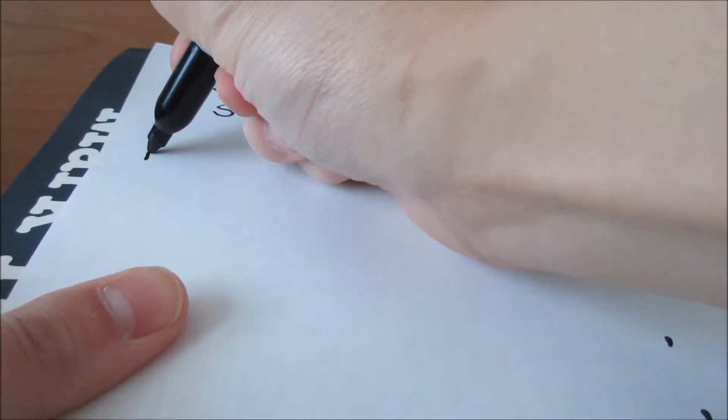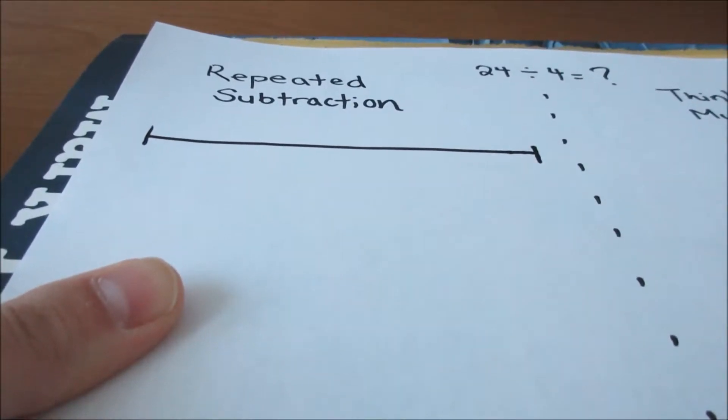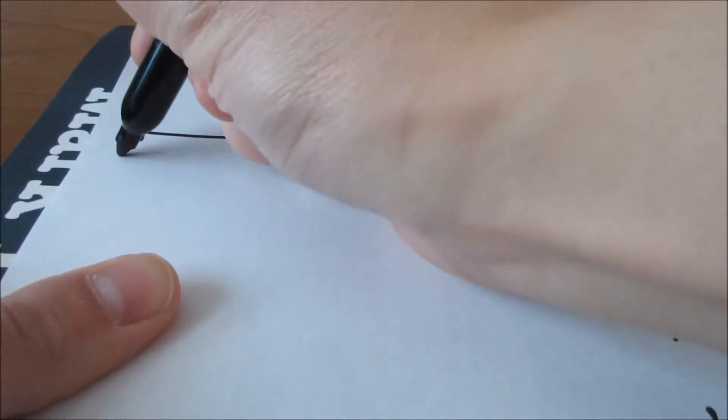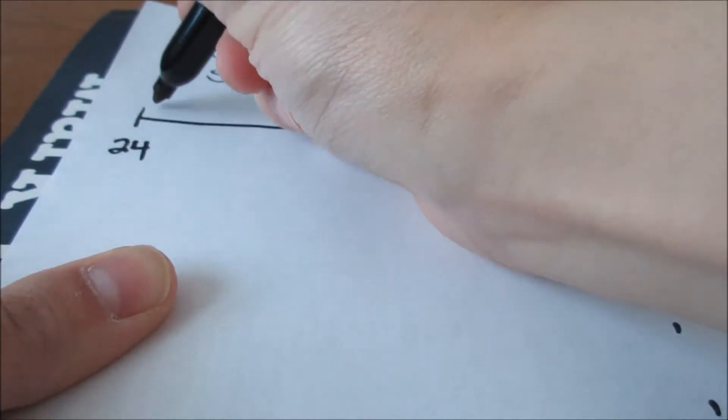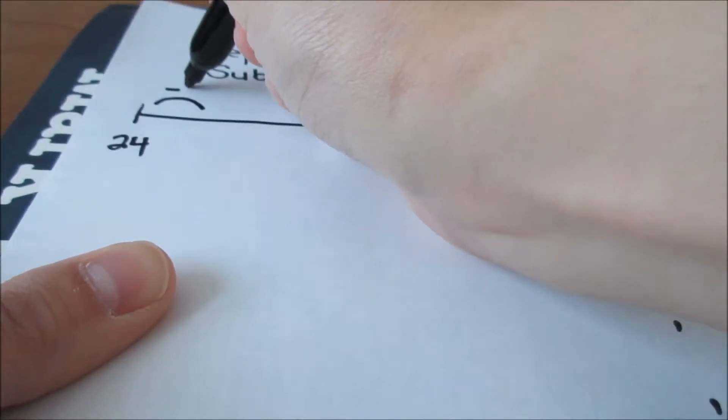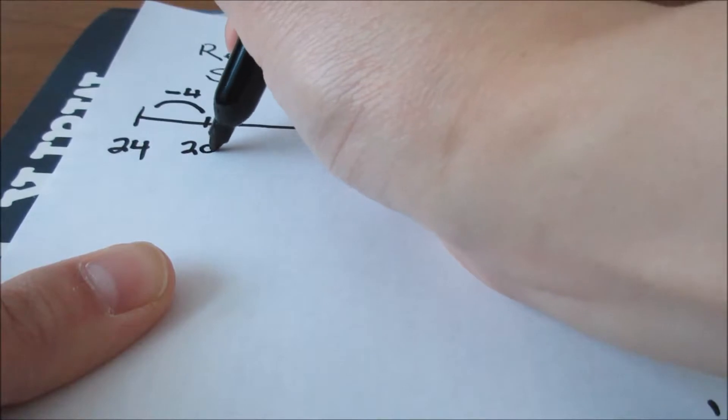With repeated subtraction, you are taking away over and over again the number 4 because you're dividing by 4. You start with the number 24 because that's your largest number and that's what you have at the beginning. And then you keep taking 4 away, so that's one time that I've taken 4 away.